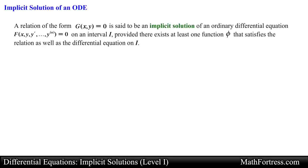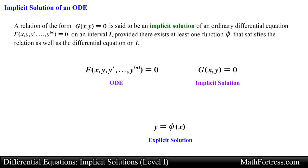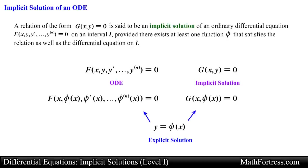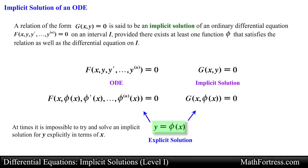In general a relation of the form g of x and y equals 0 is said to be an implicit solution of an ordinary differential equation on an interval i, provided there exists at least one function that satisfies both the relation — that is g of x, phi of x equals 0 — and the differential equation on an interval i. At times if the implicit solution is fairly simple we may be able to solve for y in terms of x and obtain one or more explicit solutions.